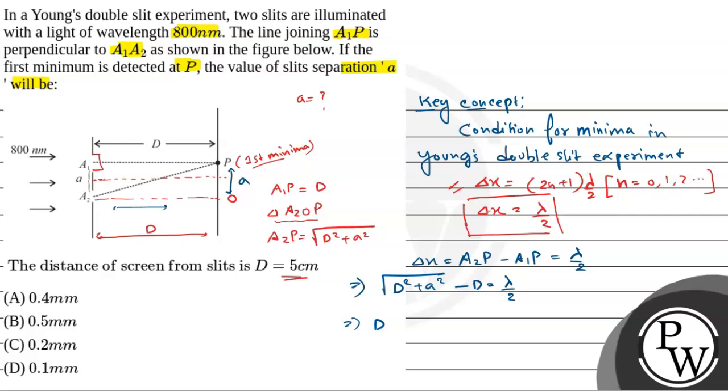Again, d ko bahar nikale this equals to d times (1 plus a square by d square) to the power half minus d equals to lambda by 2. Now, using binomial expansion, a is very very less than d so we can use binomial expansion. So d into 1 plus half a square by d square minus d is equals to lambda by 2.